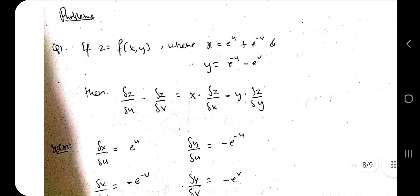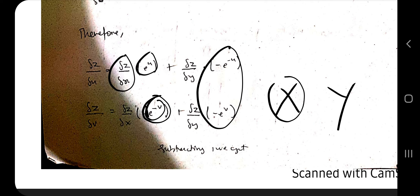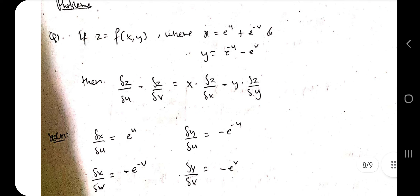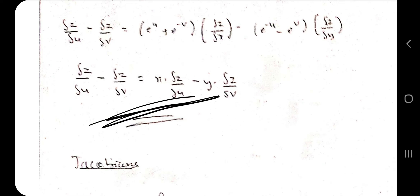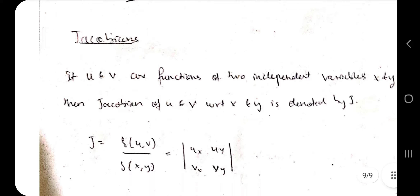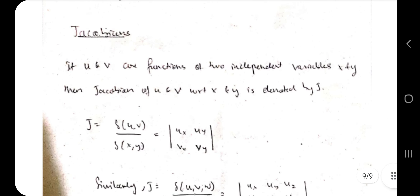After subtracting, some terms cancel out. The remaining terms in u and v form can be re-substituted back using the definitions of x and y: e^u + e^(-v) = x and e^(-u) + e^v = y. The result becomes (∂z/∂x)·x + (∂z/∂y)·y, which equals ∂z/∂u − ∂z/∂v — exactly what the question asked to prove. LHS = RHS is verified.